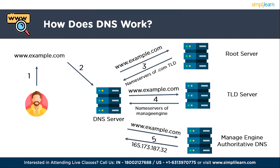Step 4: when the authoritative DNS server is found, it provides the IP address for the requested domain name. Step 5 is caching — the resolver not only returns the IP address to your computer but also stores it for a certain period in its cache, which helps speed up future requests for the same domain. Step 6 is loading the website — armed with the IP address, your computer can now contact the web server where the website is hosted, request the content, and the website loads in your browser.